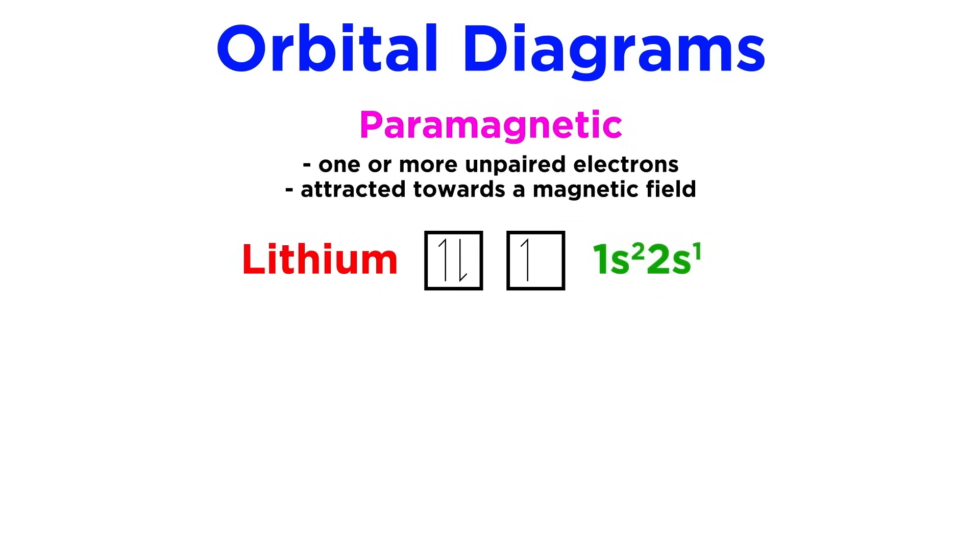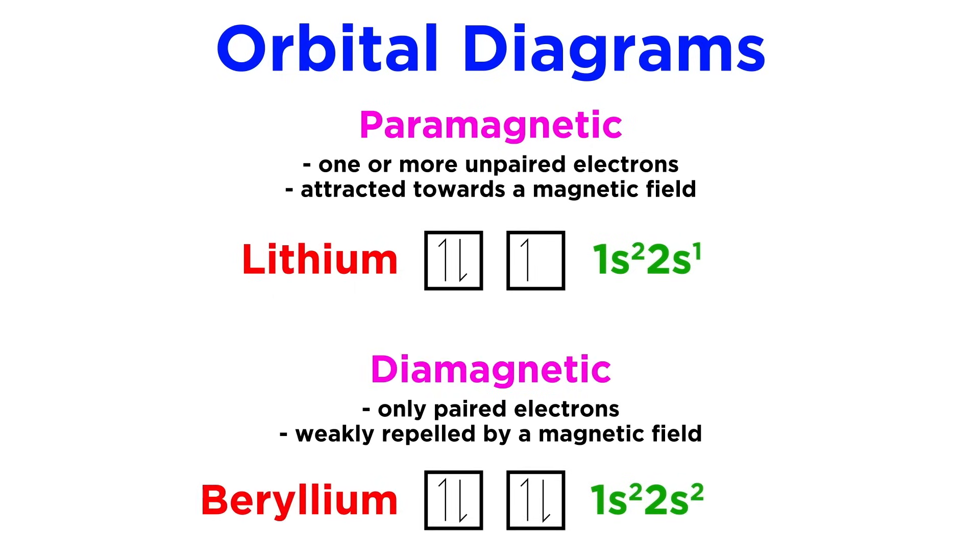One more thing to point out about electron configurations and orbital diagrams has to do with how electrons are paired. If an element has unpaired electrons in its orbital diagram, it is said to be paramagnetic. This will cause the substance to experience an attraction to a magnetic field. By contrast, if all of the electrons in the orbital diagram are paired, this substance is said to be diamagnetic, and will be weakly repelled by a magnetic field.